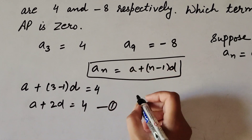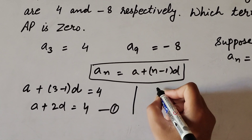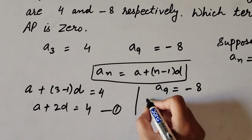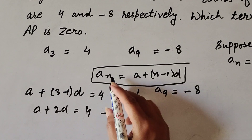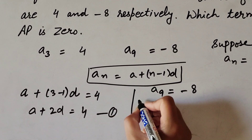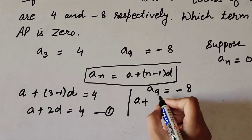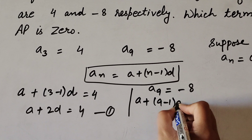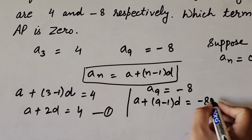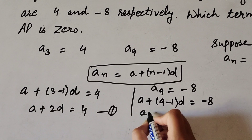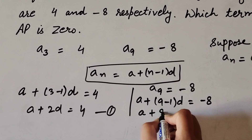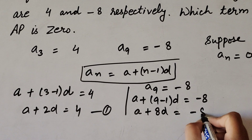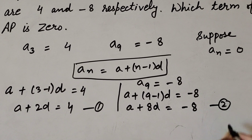The 9th term of the AP equals minus 8, so a9 equals minus 8. Here n equals 9, so: a plus (9 minus 1)d equals minus 8, giving us a plus 8d equals minus 8. We mark this as equation number 2.